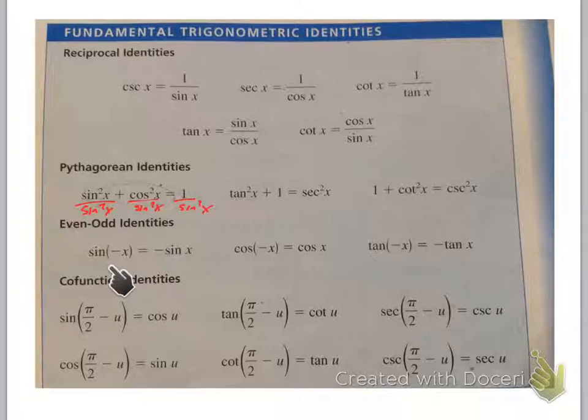Sine and tangent, if you look at, if we take a sine of a negative angle, what happens to the negative? It goes out front. If I take tangent of a negative angle, the negative gets to move out front. That's an odd function.